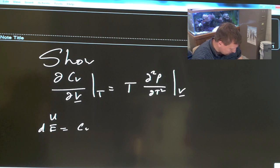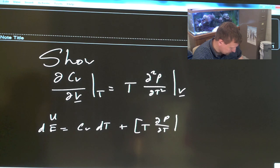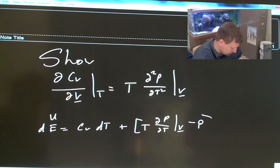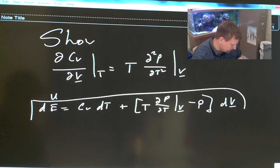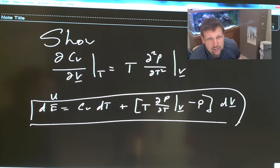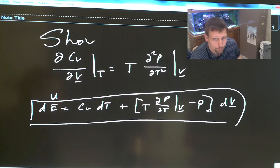DE equals CVDT plus T del P del T constant V underbar minus P, DV underbar. To see how you get this equation, I refer you to another video where we focus on the first Maxwell relation solution to a problem. So we're going to begin with this.